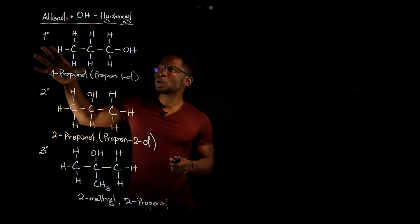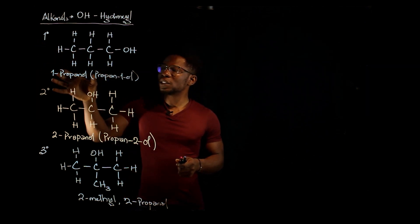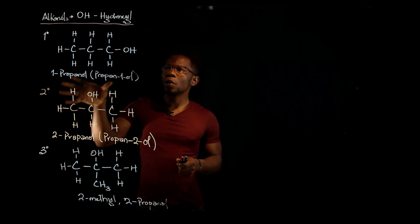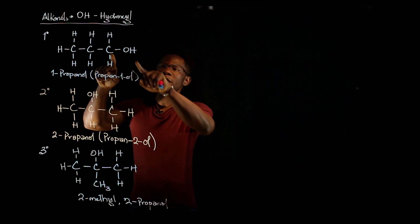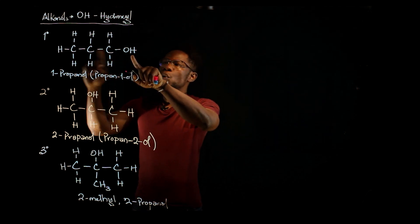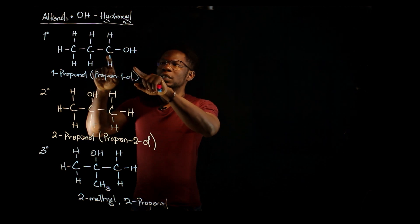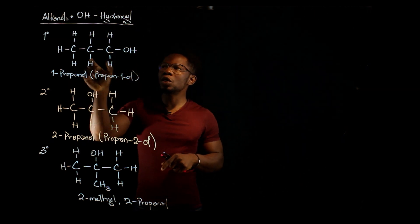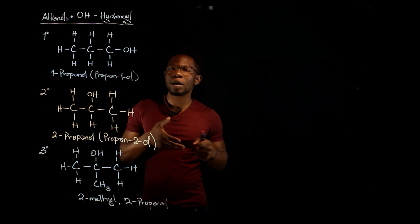The first one is the primary alcohol — this is 1-propanol. It's called a primary alcohol because the carbon atom attached to the hydroxyl group is attached to only one other carbon atom. That's why it's called a primary alcohol.